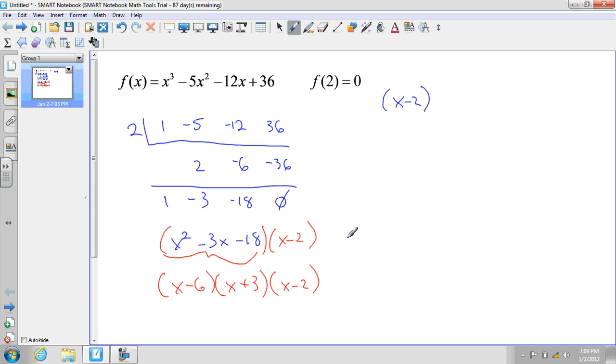And so our zeros—let's write here 'factors'—our zeros are 6, -3, and 2.